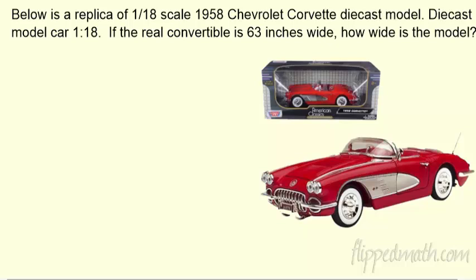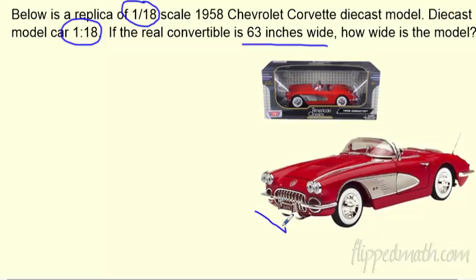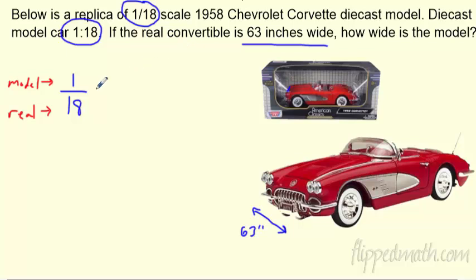Now let's get back to proportions for word problems — I much prefer them here. I've got a replica model of a Corvette. The scale is one-eighteenth of the real one, or the ratio 1 to 18. The real car is 63 inches wide — what is the width of the model? I set up a proportion: one is to 18 as model width is to real life width. On top is the model, on bottom is real life.